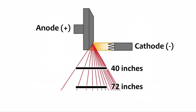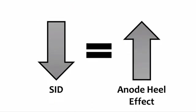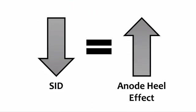Changes in SID also affect the extent of the anode heel effect. Decreasing or shortening the SID increases the heel effect. Shortening the distance causes the receptor to get exposed to more of the low intensity beam on the anode side and more of the high intensity beam on the cathode side, resulting in an increased difference in intensity. The relationship between SID and the heel effect is inverse — as the SID decreases, the anode heel effect increases.